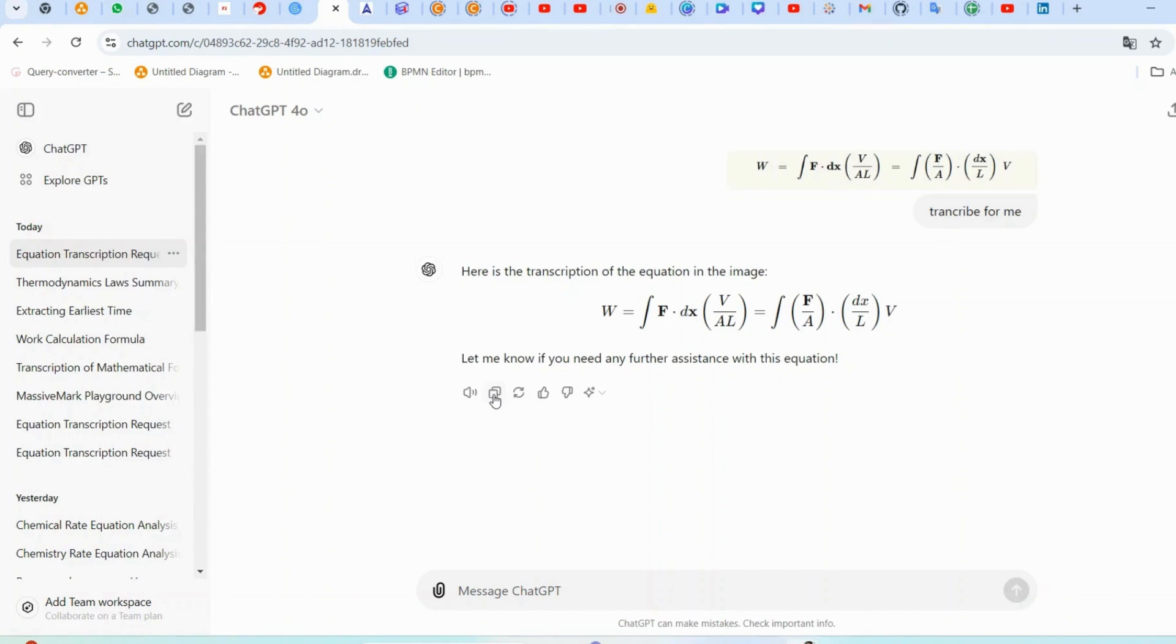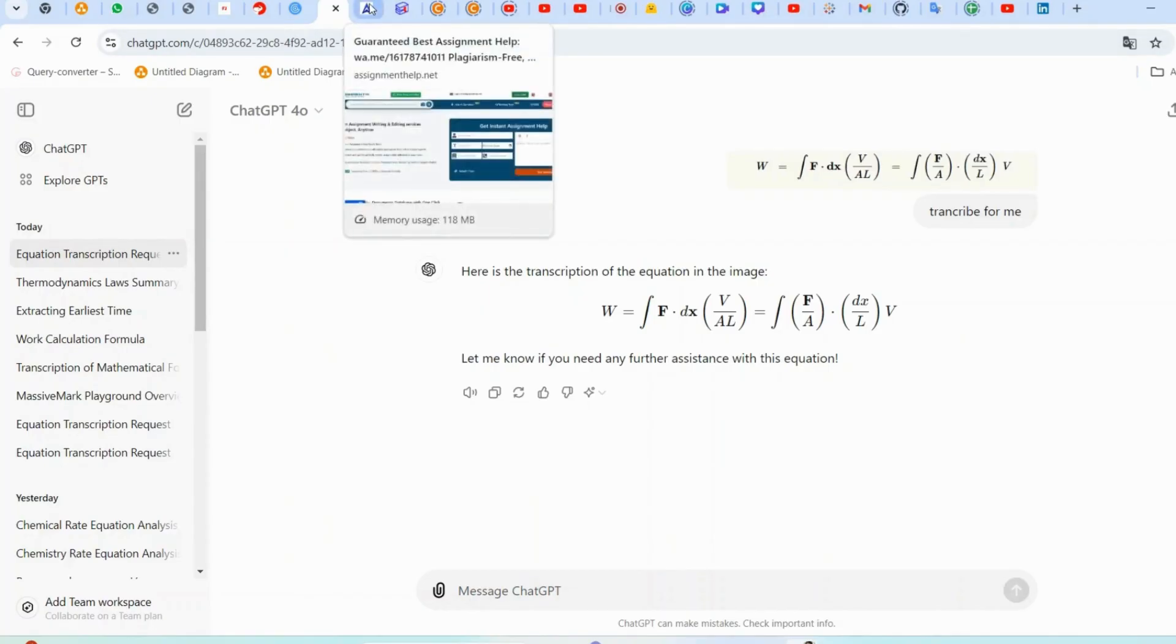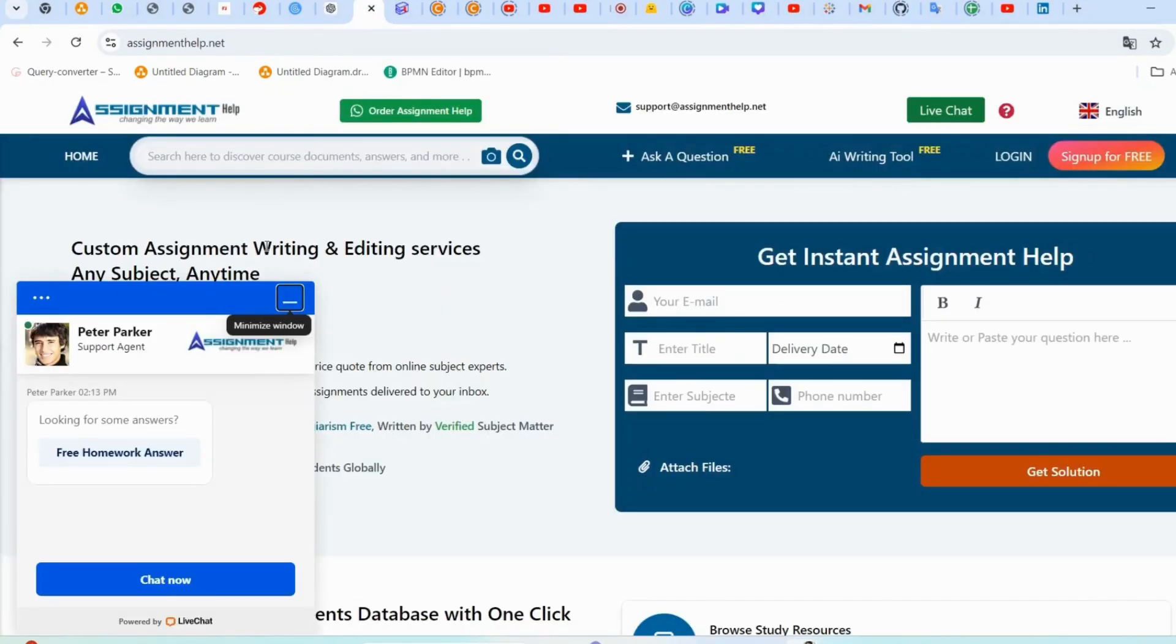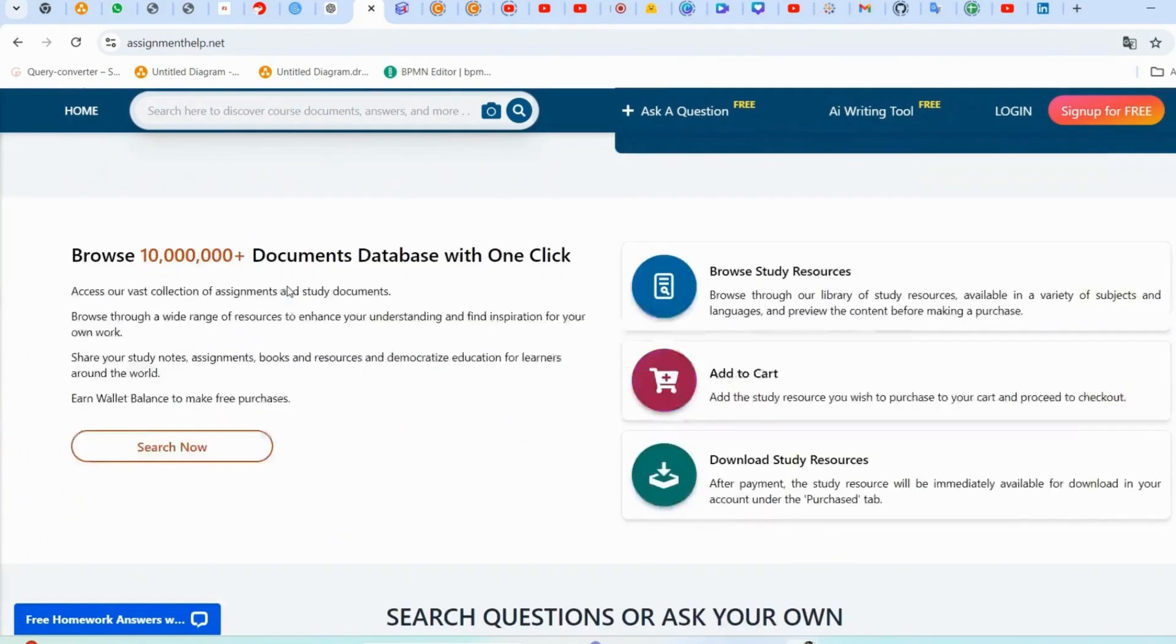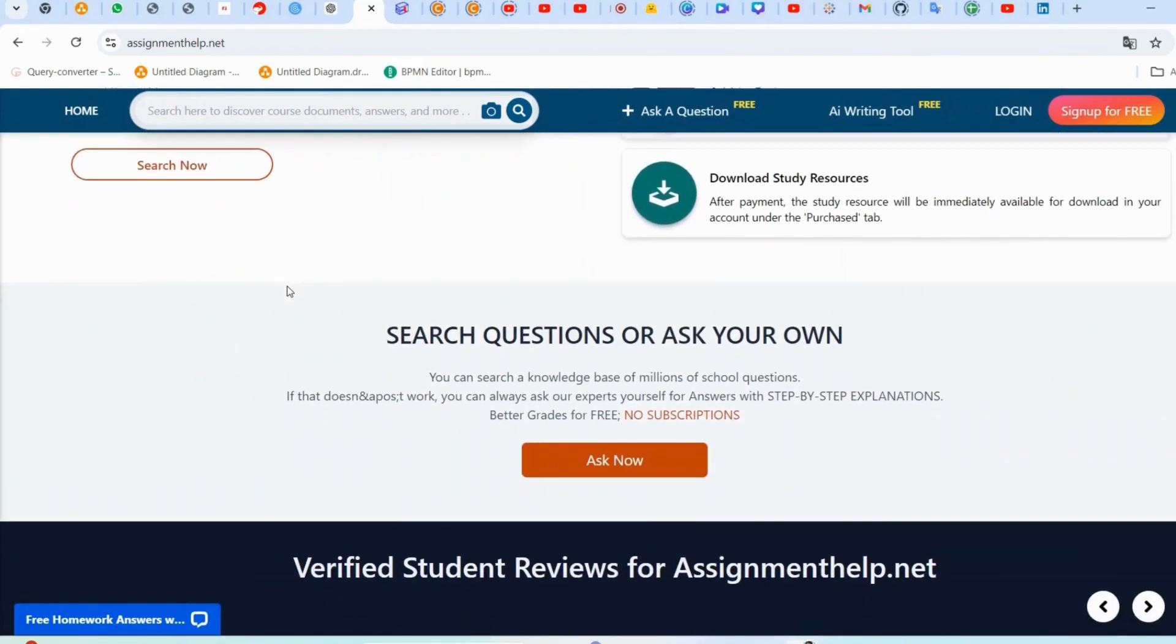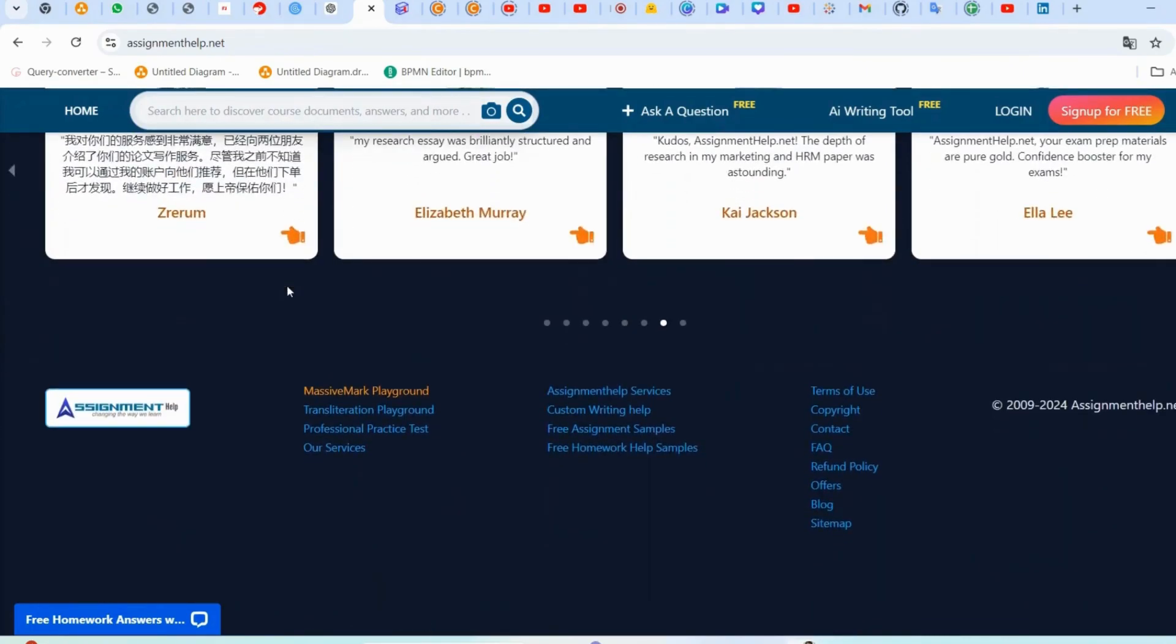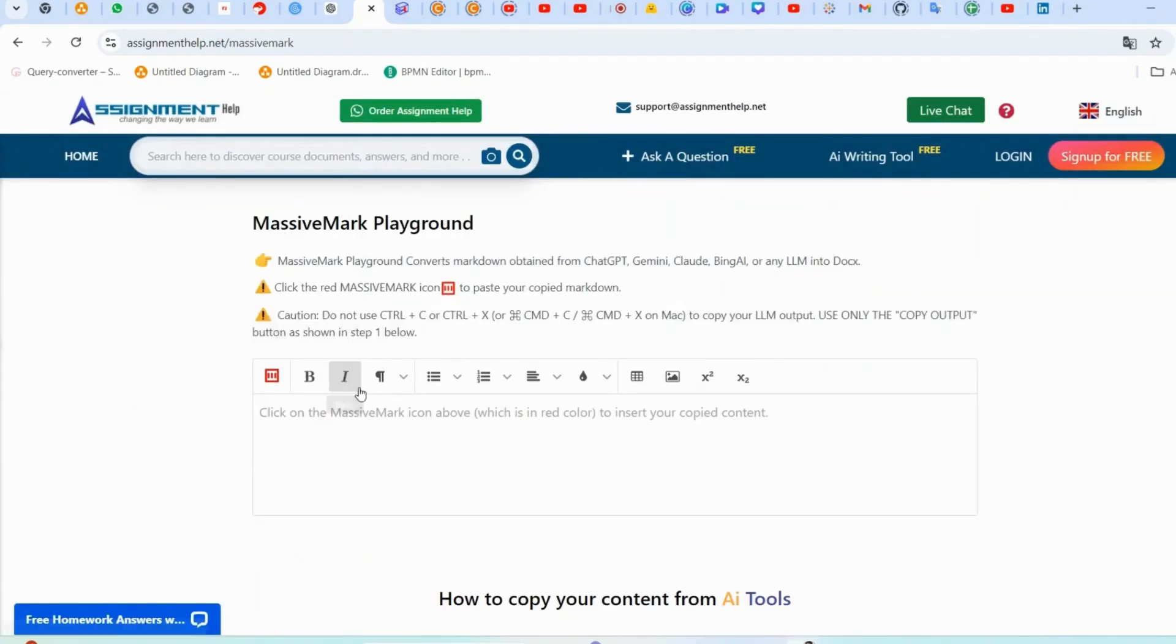Here are the steps to follow with MassiveMark Playground. First, visit the MassiveMark Playground on AssignmentHelp.net website. Just head over to www.assignmenthelp.net and in the footer click on the orange MassiveMark Playground button. Once you land on the page of MassiveMark Playground, find the red MassiveMark icon and click on it to paste copied ChatGPT or Gemini AI or any other AI copied content.